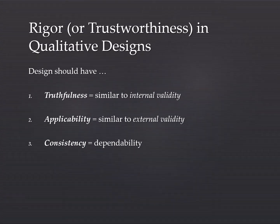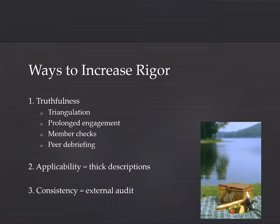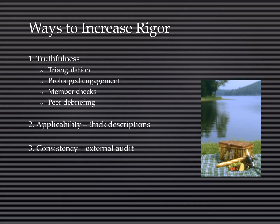Within qualitative design we want to make sure we have rigor or trustworthiness. To do so, each qualitative design should have truthfulness, applicability, and consistency. Truthfulness in qualitative design is similar to internal validity; applicability is similar to external validity with quantitative design. We want to make sure we're being honest and can apply what we've learned to a different audience. Consistency is dependability and can range from within the researcher to the researched situation, person, or culture.